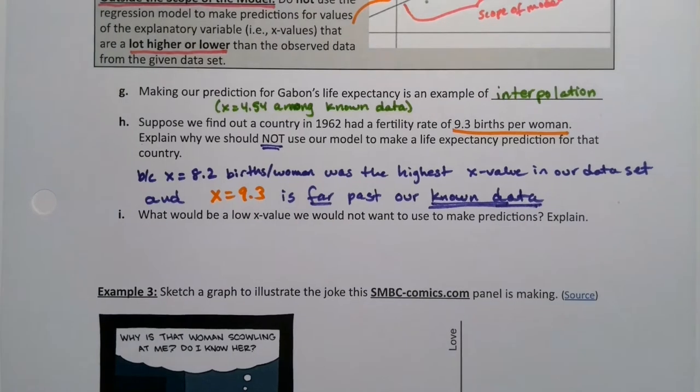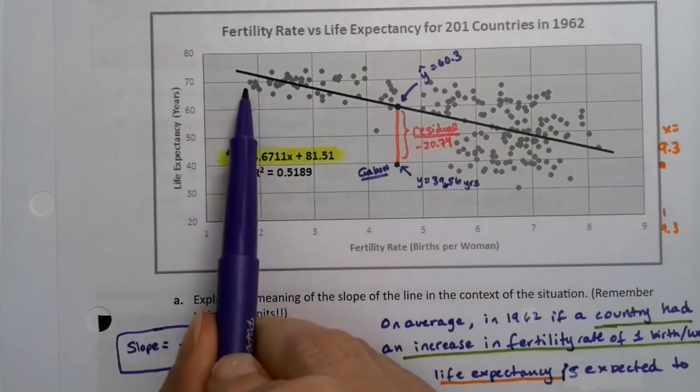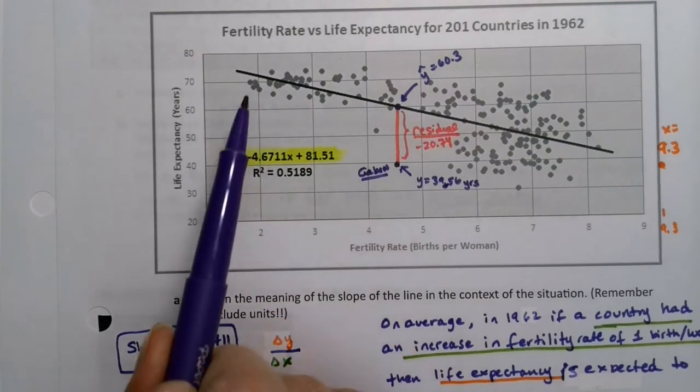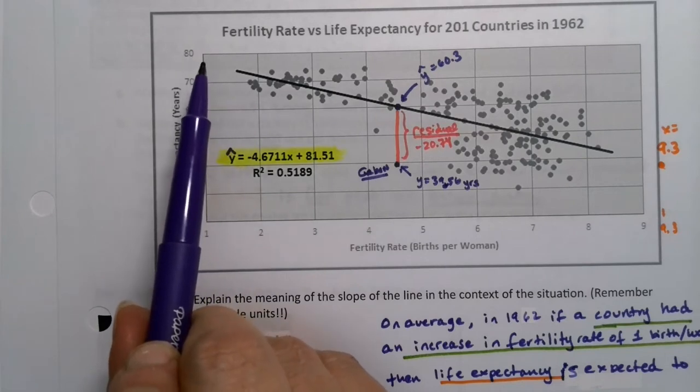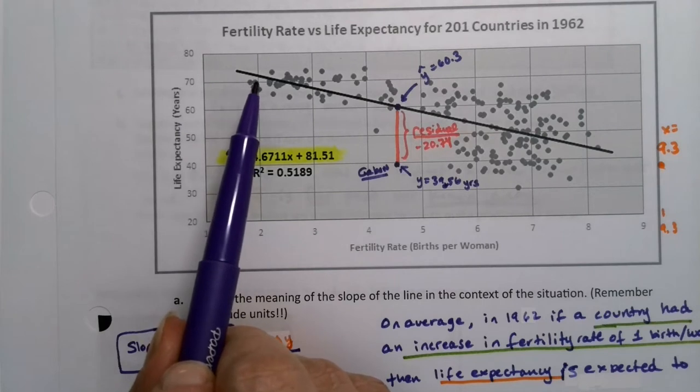What would be a low value that we would not want to use to make predictions? Well, again, it's a little bit of a judgment call. But we can see here, this is about 1.8 right there, really close to 2. So I wouldn't even want to do it for 1. I mean, a country that has 1 birth per woman is very different from a country with 1.8 or 1.9 births per woman.